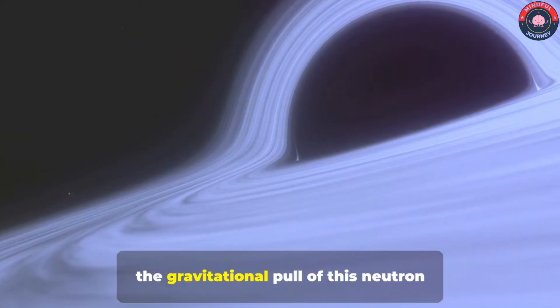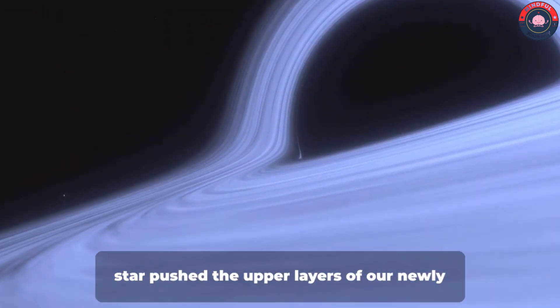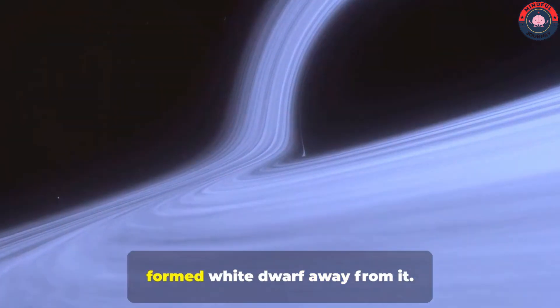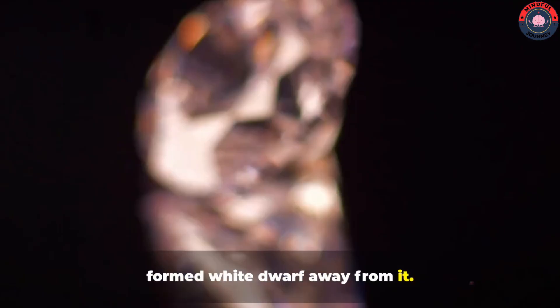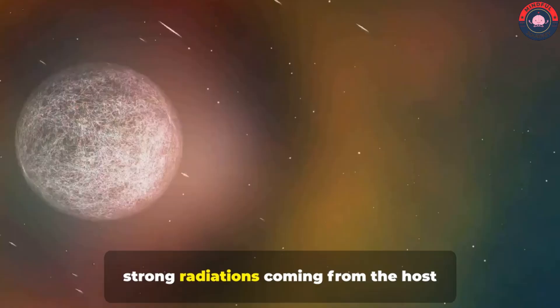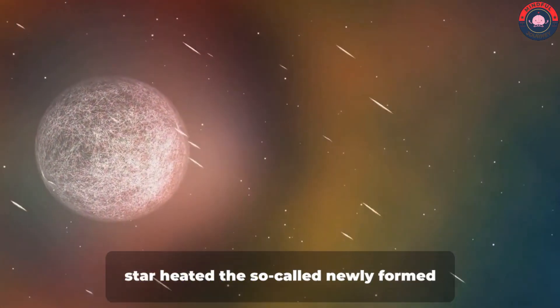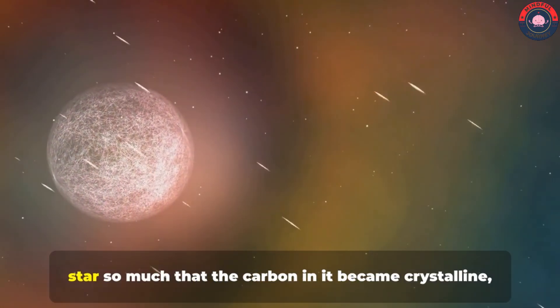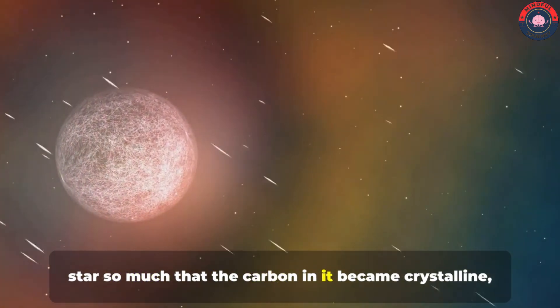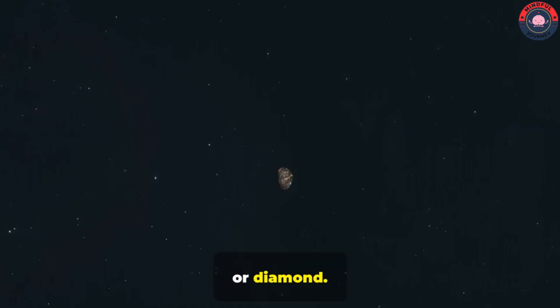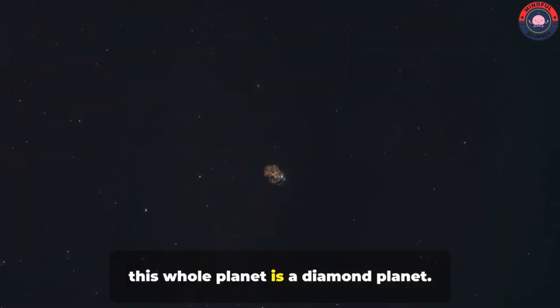Even after it exploded, the gravitational pull of this neutron star pushed the upper layers of our newly formed white dwarf away from it. And after that, strong radiations coming from the host star heated the so-called newly formed star so much that the carbon in it became crystalline, or diamond. And hence, this whole planet is a diamond planet.